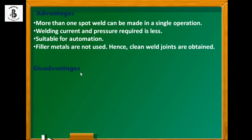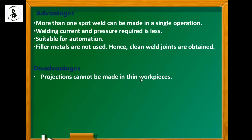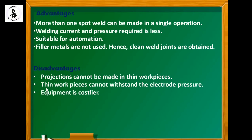Some disadvantages are: projections cannot be made in thin workpieces, which makes it difficult for thin sheet metal sections. Thin workpieces cannot withstand the electrode pressure, so the surface may get damaged and proper joints cannot be achieved. The equipment is also costlier.